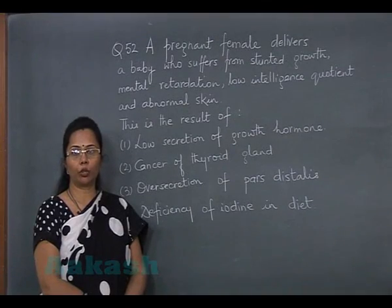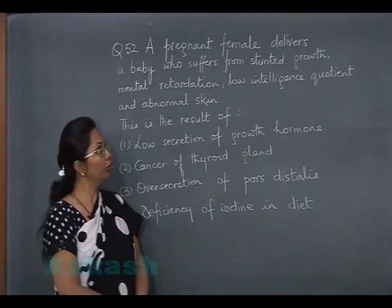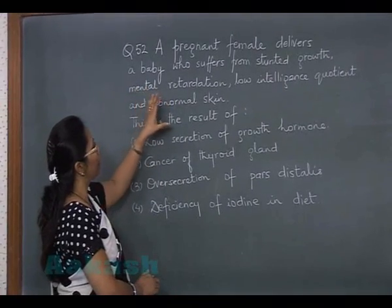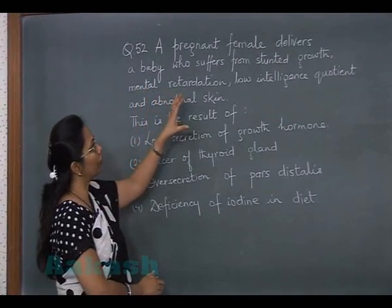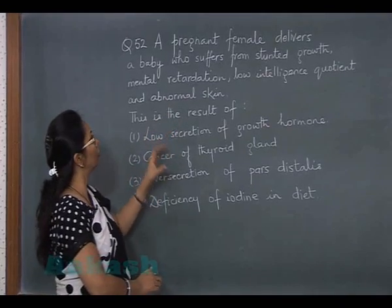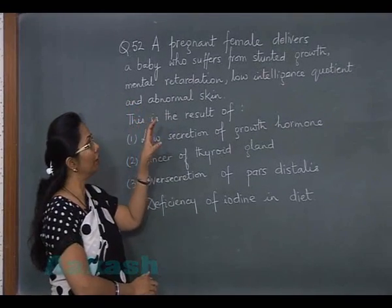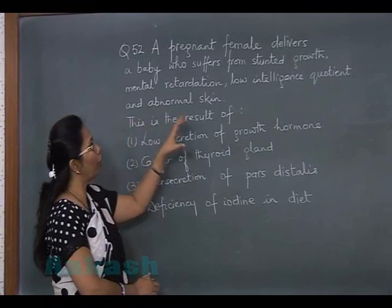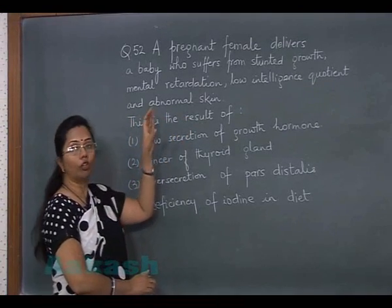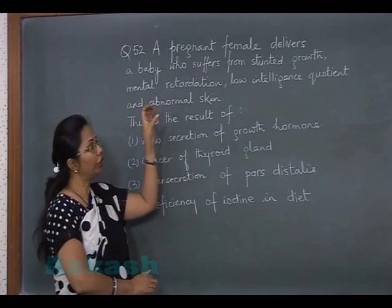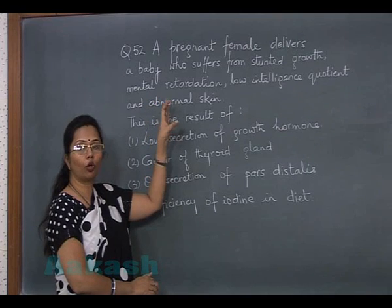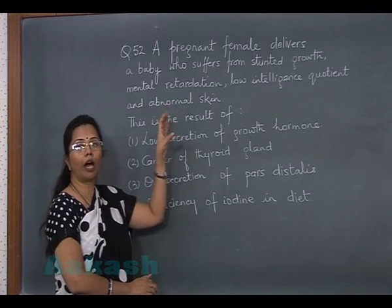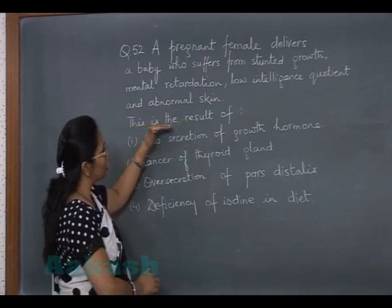Let's discuss question 52. A pregnant female delivers a baby who suffers from stunted growth, mental retardation, low intelligence quotient, and abnormal skin. These are the typical symptoms of cretinism, which is due to hypothyroidism.